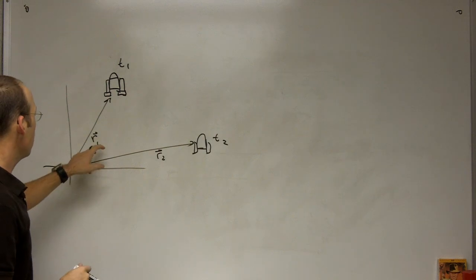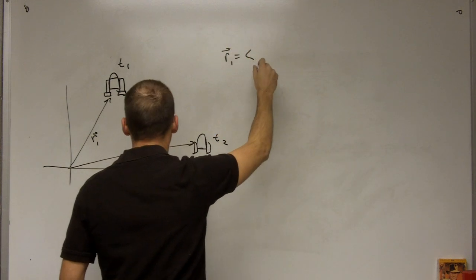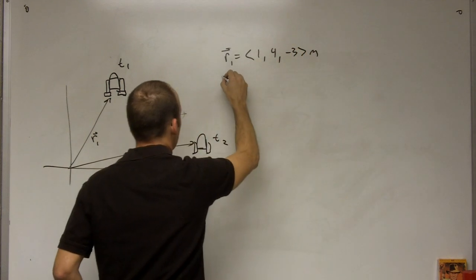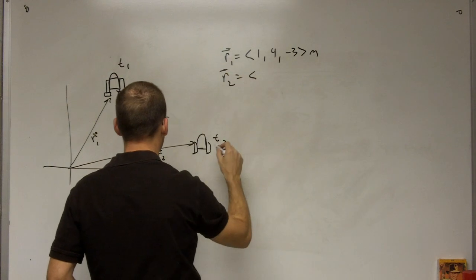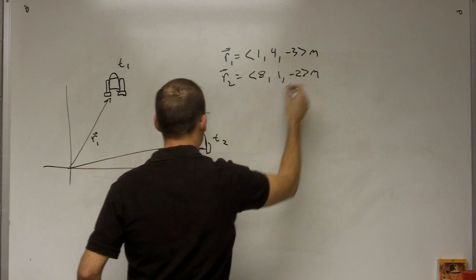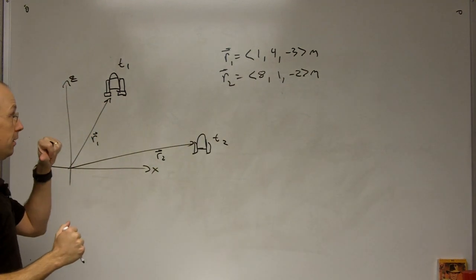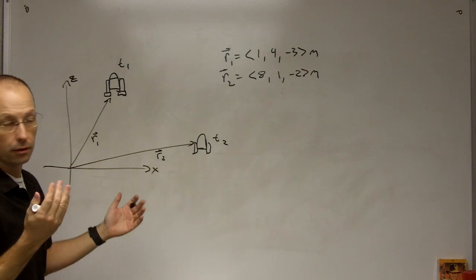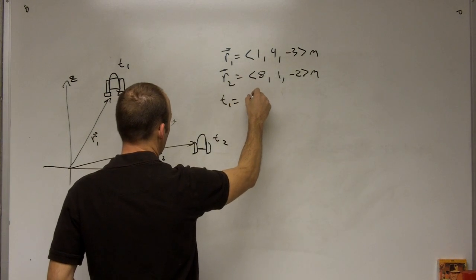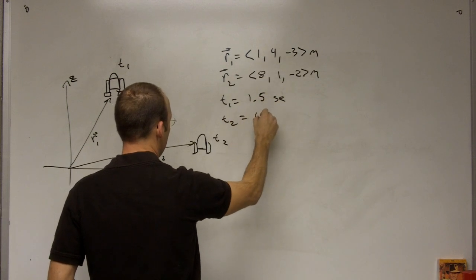Okay, so let's just make up some stuff here. Let's say that R1 is 1, 4, negative 3 meters. R2 is 8, 1, negative 2 meters. I mean, so this is the x-axis, and this is the z-axis. And so this is positive z, so that's negative z, so he is kind of behind the board. Okay, so maybe that's where the camera is. And let's say T1 is 1.5 seconds, and T2 is 6.2 seconds.